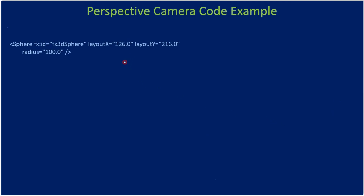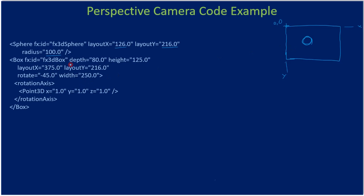Our sphere is positioned at layout x=126, layout y=216, and the radius of the sphere is 100. So in the XY plane, at layout x=126 and layout y=216, that is where the sphere is. Similarly, the box is at layout x=375 and layout y=216, at the same y location.